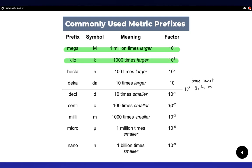Kilo, a thousand times bigger. Hecta, a hundred times bigger, and deka, 10 times bigger.